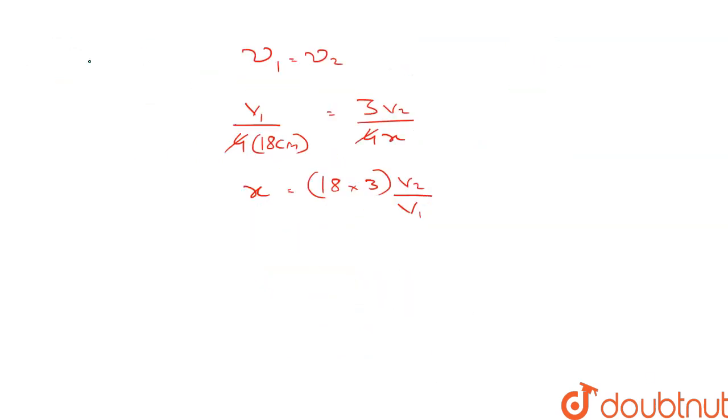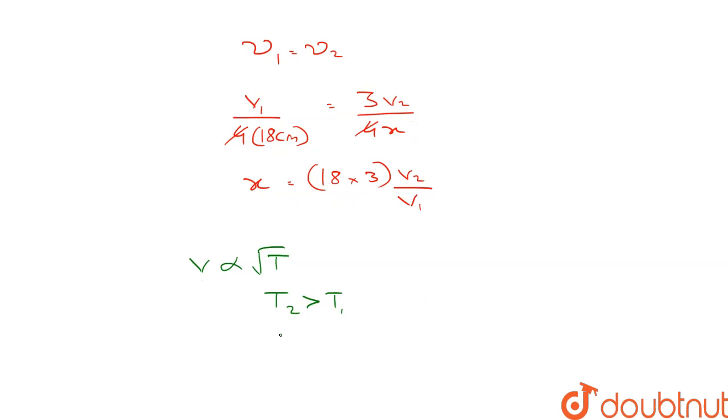Now we know that the speed of sound denoted as V is proportional to the square root of absolute temperature. Since the summer temperatures are greater than winter temperatures, we can say that T2 is greater than T1 and therefore we can say that V2 is also greater than V1.